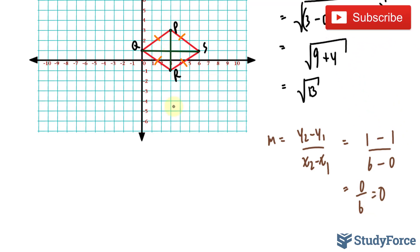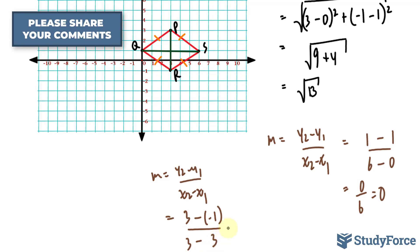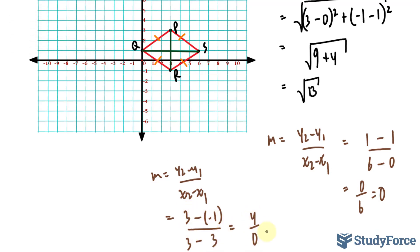Now let's find the slope of P to R. Once again, M is equal to Y2 minus Y1 over X2 minus X1. Let's consider this our first point, and it has a Y coordinate of 3. R has a Y coordinate of negative 1. This has an X coordinate of 3, and this one has an X coordinate of 3 as well. So we have 3 minus minus 1, which is equal to 4 over 0. That's undefined, and that's what we expected. If you have a vertical line, you're going to have an undefined slope. 4 divided by 0 doesn't give you an output.